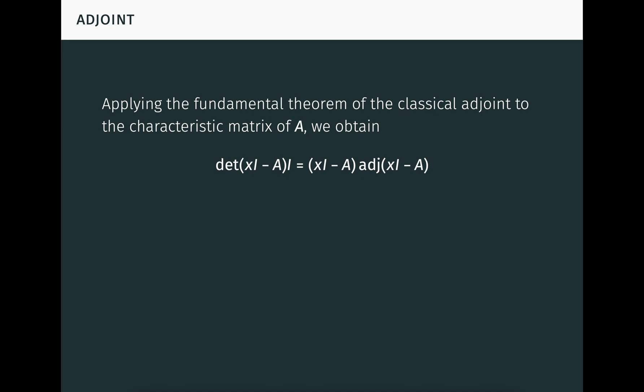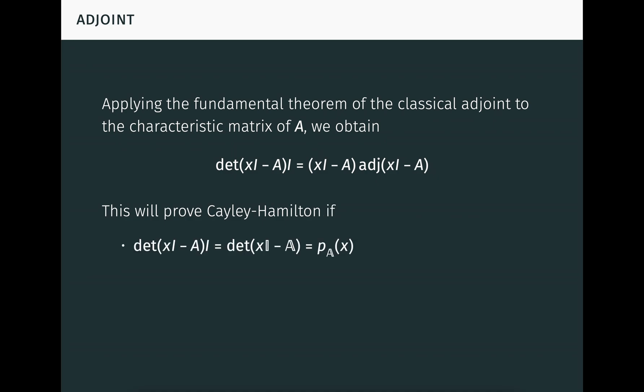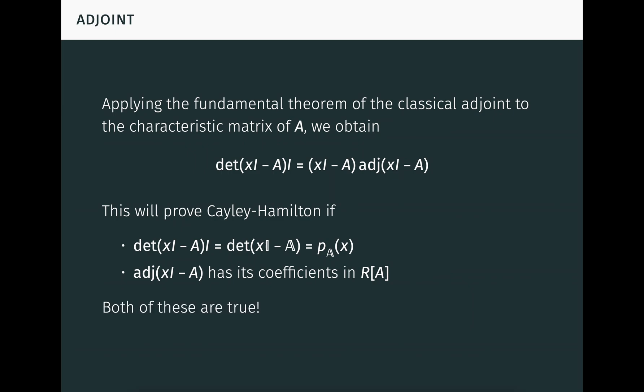This equation relates matrices with polynomial entries, but those can be viewed as polynomials with matrix coefficients. In fact, this equation will prove the Cayley-Hamilton theorem provided that the left-hand side amounts to the characteristic polynomial of bold A, and the adjoint on the right-hand side, when viewed as a polynomial in X, has its coefficients in R[A]. And in fact, both of these things are true.